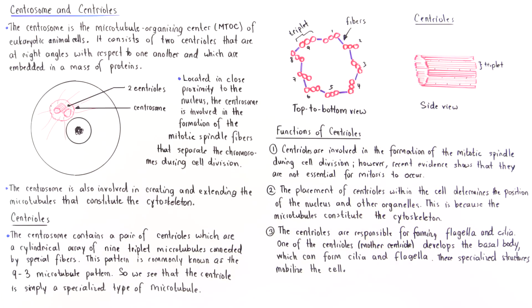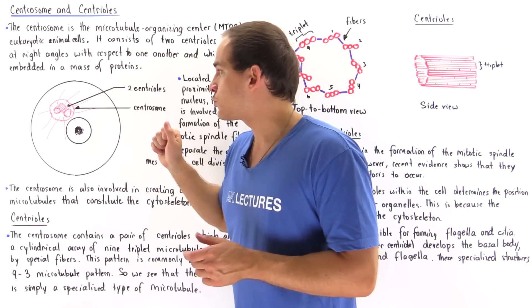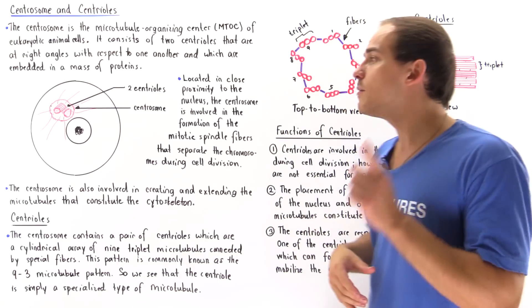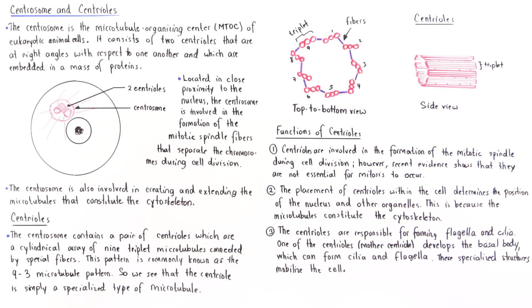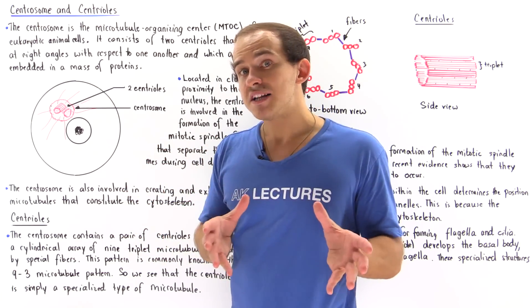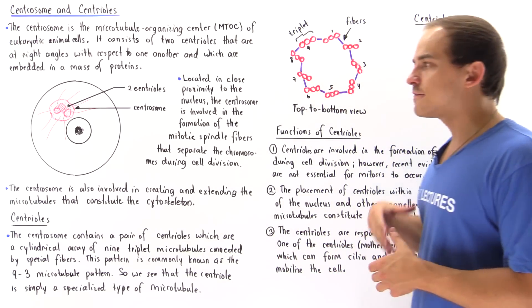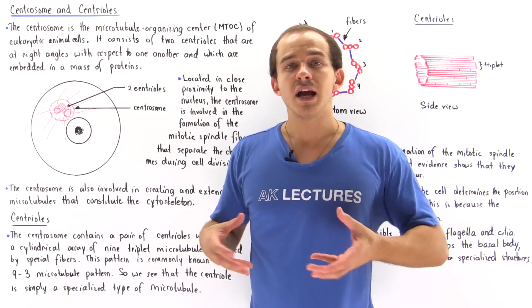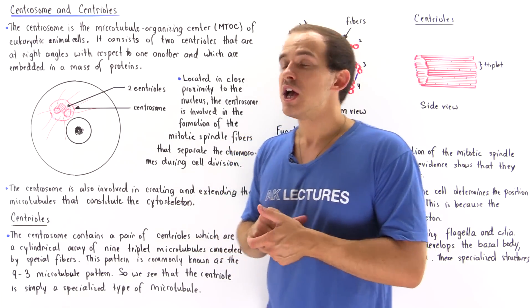Finally, the third function of the centriole. The centrioles are responsible for forming the flagella and the cilia that our cells have. So one of the centrioles, remember we have two centrioles. One centriole is called the daughter centriole. The other centriole is called the mother centriole. It's the mother centriole that can develop into the basal body, and the basal body is basically the structure in the cell that is responsible for forming cilia as well as flagella. Cilia and flagella are two types of specialized structures that basically allow the cell to move. They mobilize the cell.